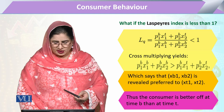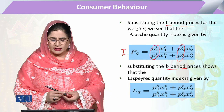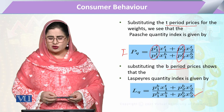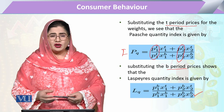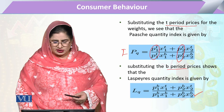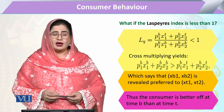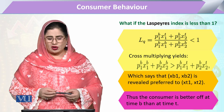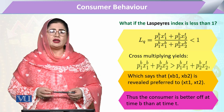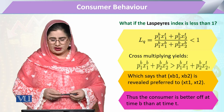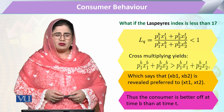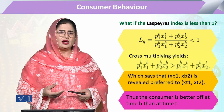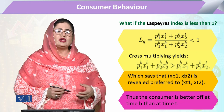In the Laspeyres quantity index, the denominator has quantities from the base period and the numerator has quantities from period T. If the Laspeyres index is less than one, cross multiplying shows that the base period bundle was preferred — meaning the consumer is better off in the current time period T compared to the base period, because they are giving more weightage or preference to the current bundle.